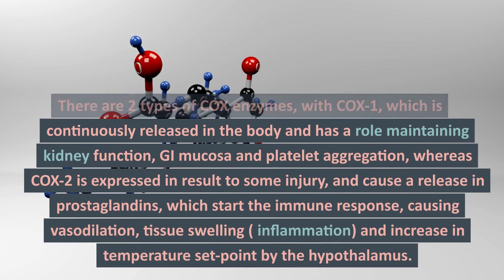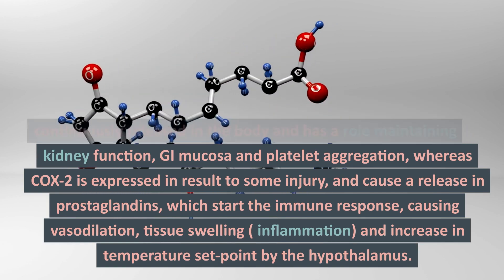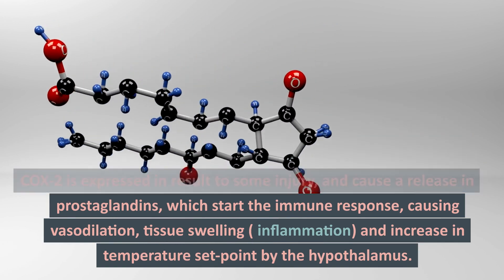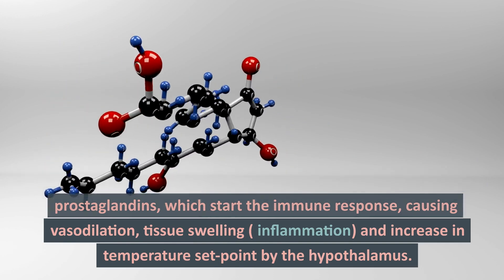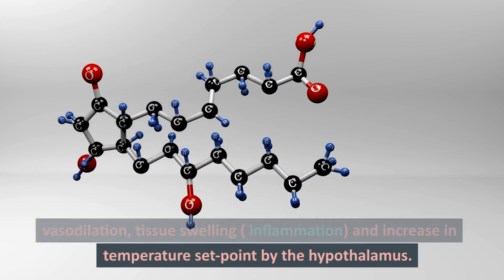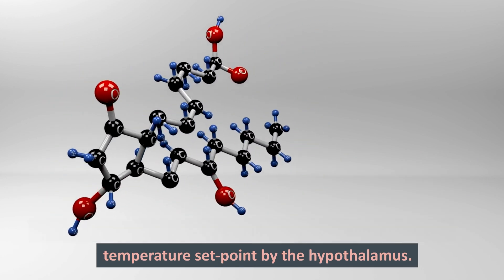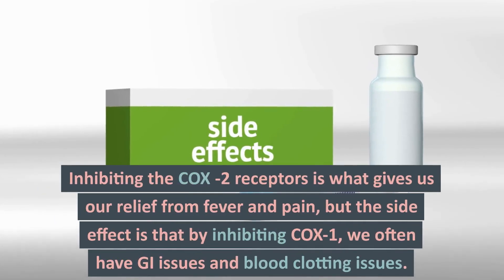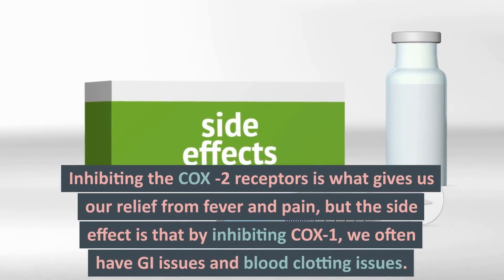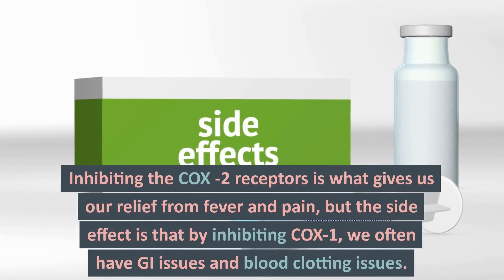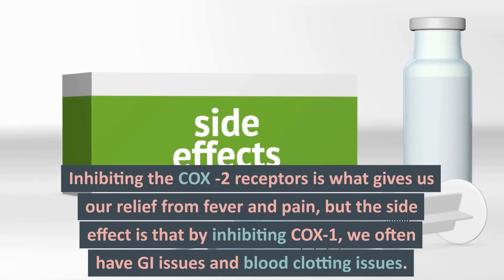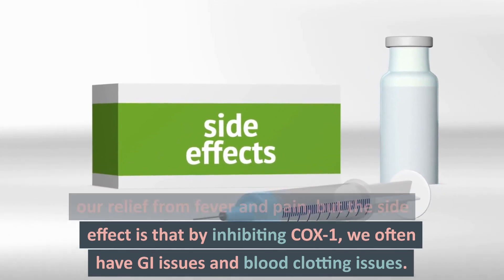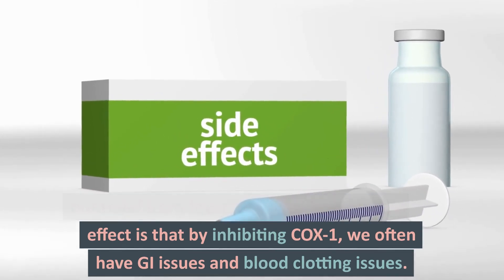COX-2 causes a release of prostaglandins which start the immune response, causing vasodilation, tissue swelling or inflammation, and increasing the temperature set point by the hypothalamus. So inhibiting the COX-2 receptors is what gives us our relief from fever and pain, but the side effect is that we also inhibit the COX-1 receptors, so we get the GI issues and blood clotting problems that come with taking NSAIDs.